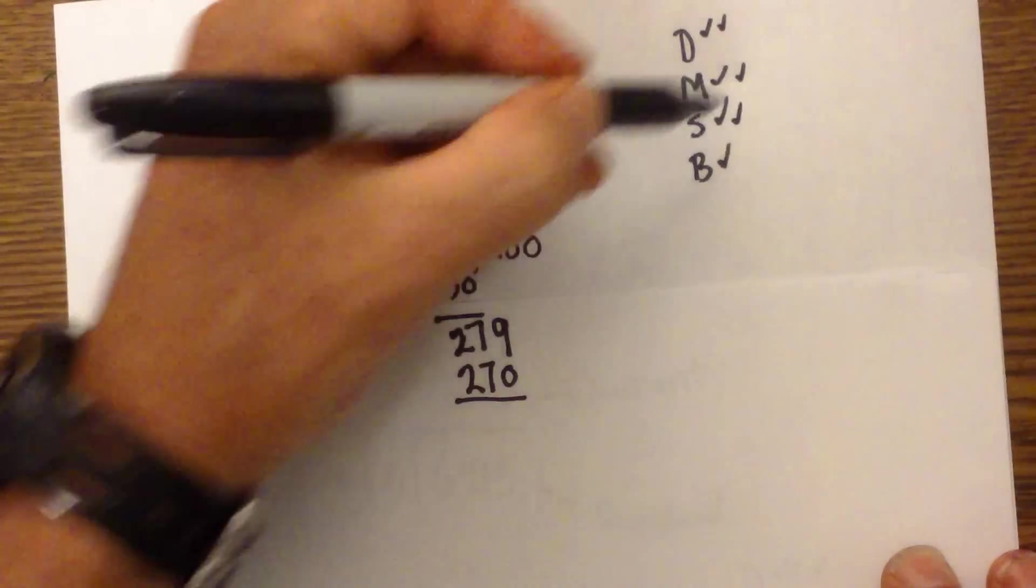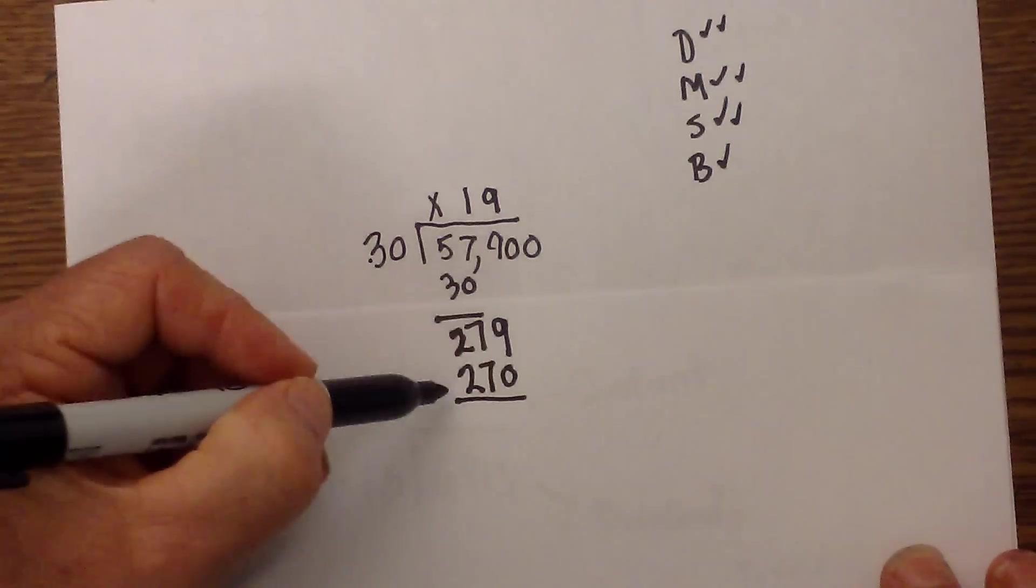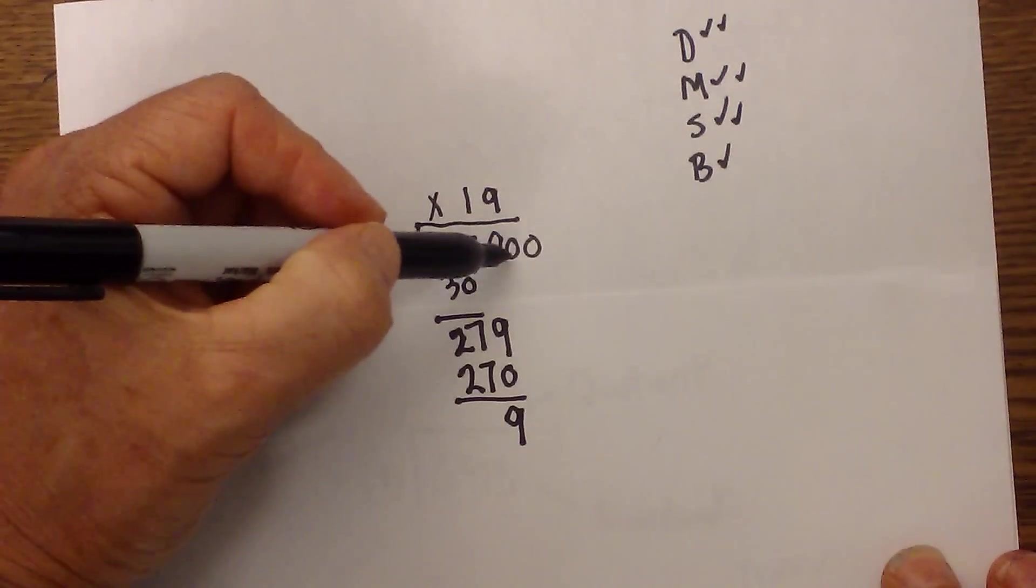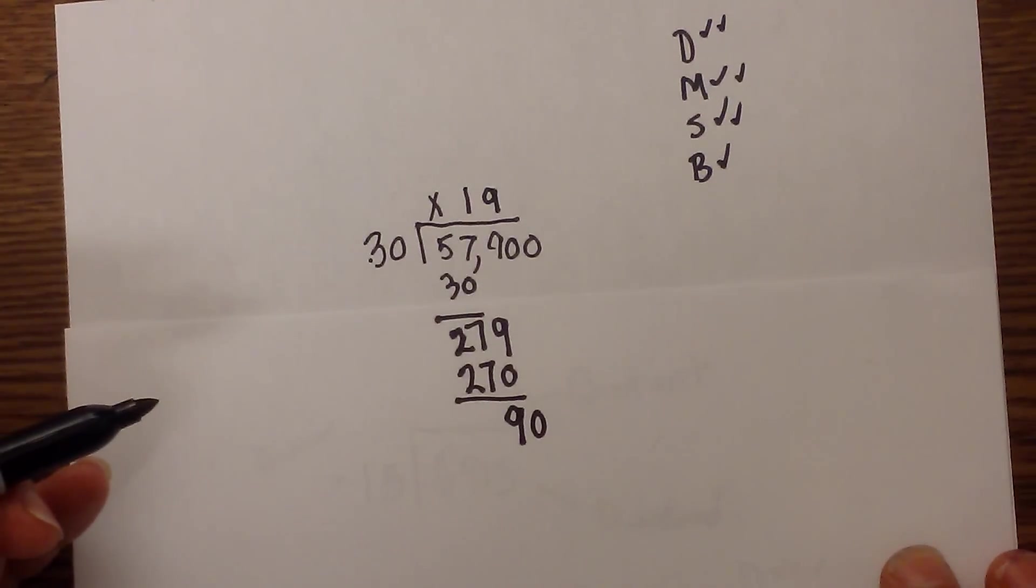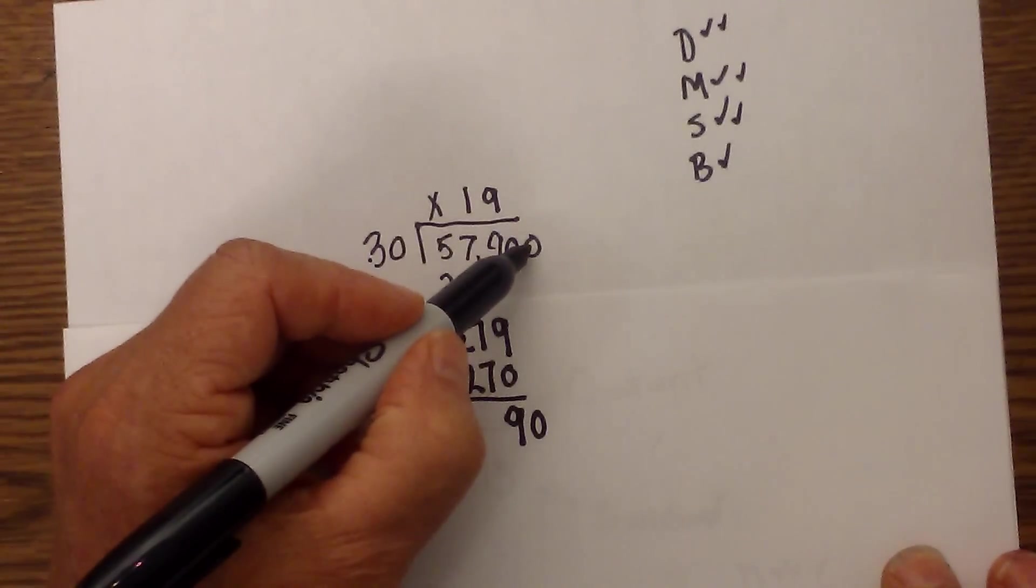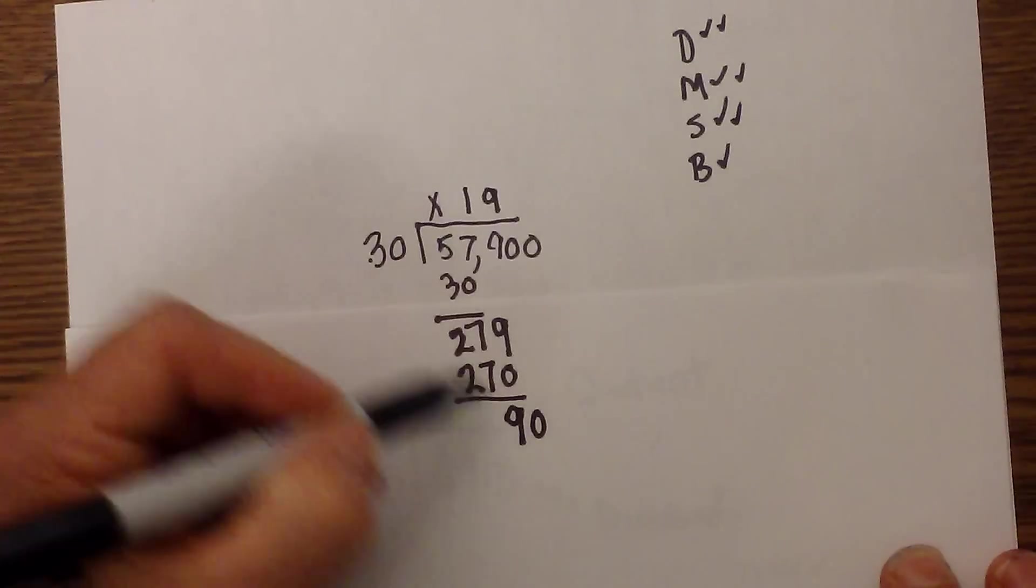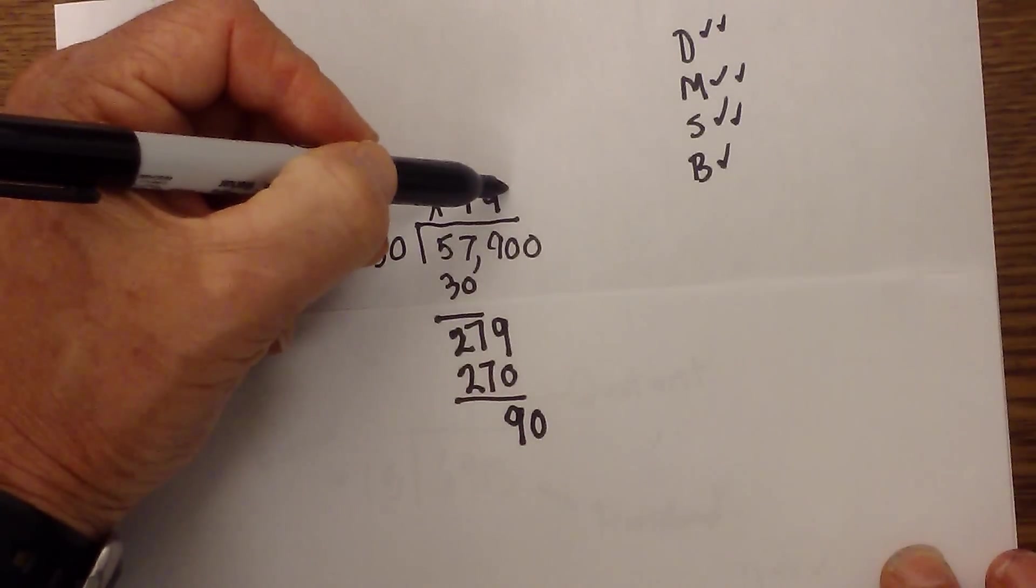Next we have subtraction. 279 minus 270 is 9. Now we bring down the 0. Now we repeat, because we still have a dividend. So next, 90 divided by 30 will be 3.